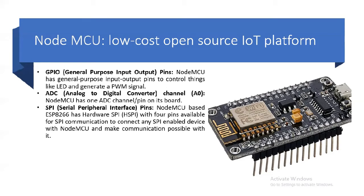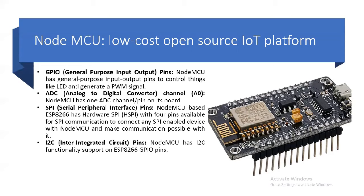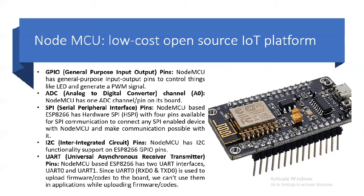SPI pins — that means Serial Peripheral Interface pins — are also available in NodeMCU for interfacing with external devices. There are inter-integrated circuit (I2C) pins available on NodeMCU for serial interfacing. There are also two types of Universal Asynchronous Receive Transmit pins available: UART0 and UART1, which are used to upload the firmware codes to the board. These cannot be used in an application while uploading the firmware or codes.